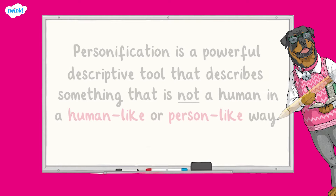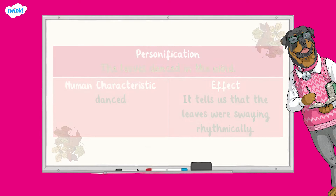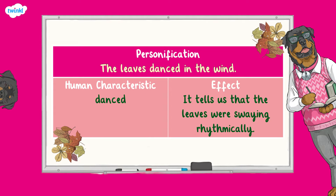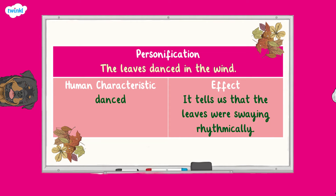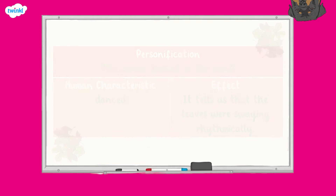For example, an author might write: the leaves danced in the wind. Although 'danced' is a human action and leaves can't really dance, it gives a strong impression to the reader about how the leaves were moving — that they were probably swaying rhythmically.